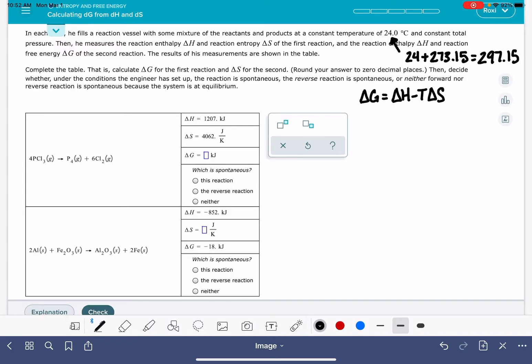So let's take a look at the first question. In the first one, we have the value of delta H, we have the value of delta S, and we need to calculate delta G using this equation.